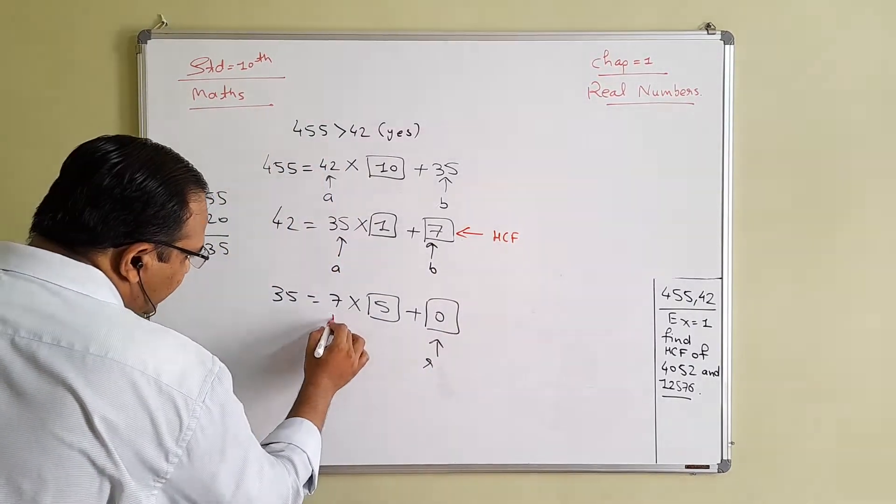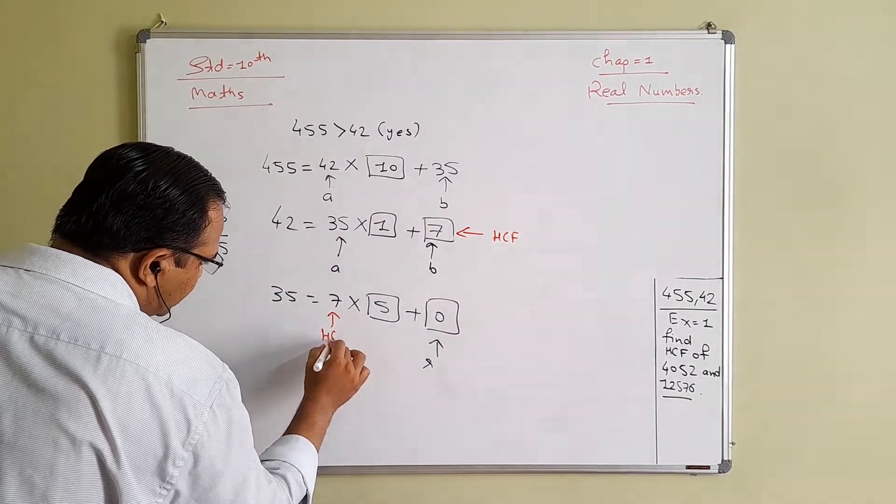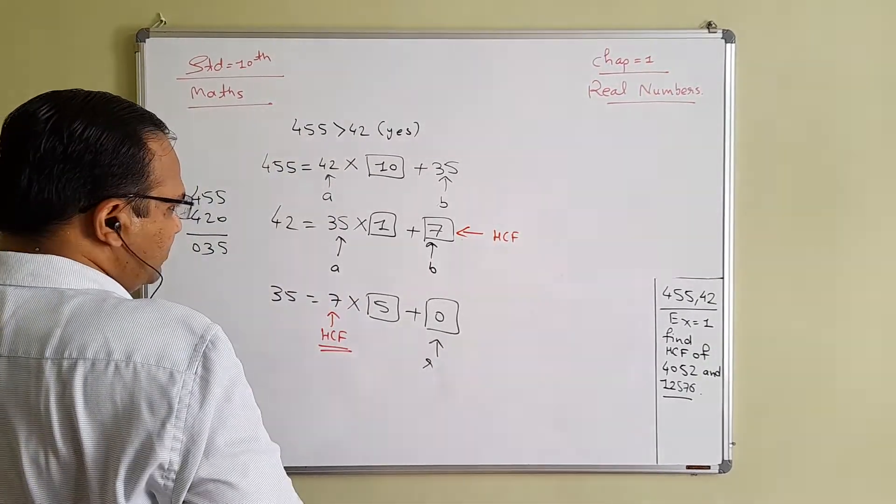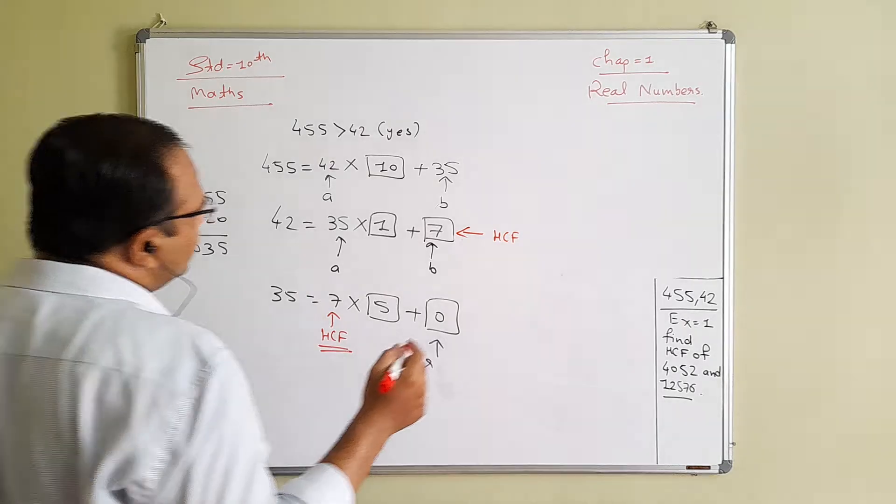is the HCM, or you can say at this point this is also your HCM. So 455 and 42 both are the numbers which can be divided by 7.